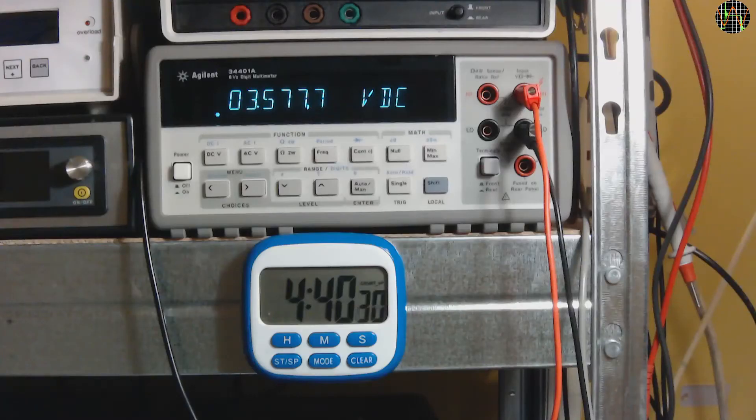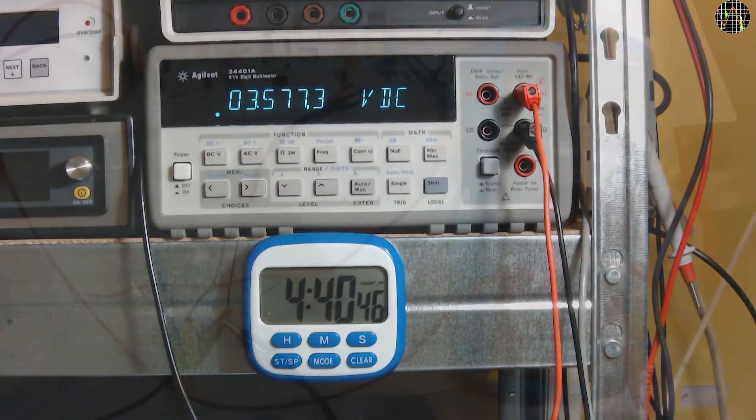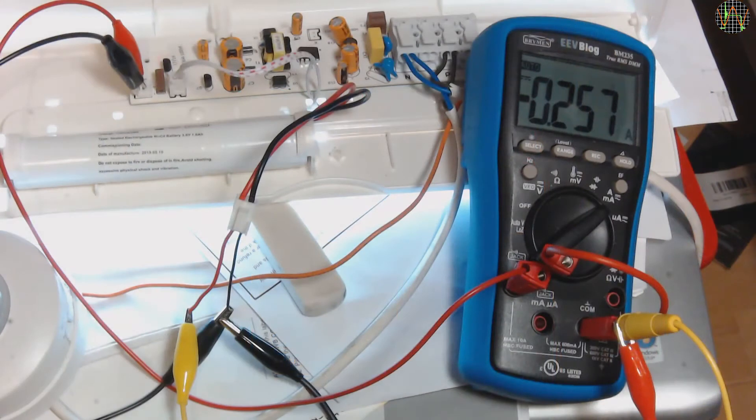Since the battery is now fully charged, I decided to see how long it would last when powering the LEDs. Here you see the battery voltage 4 hours and 40 minutes in at 3.57V, still almost nominal voltage. The LEDs are still brightly lit. And at the same time, the battery discharge current was 257mA.